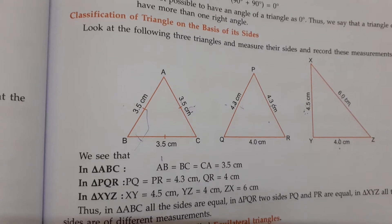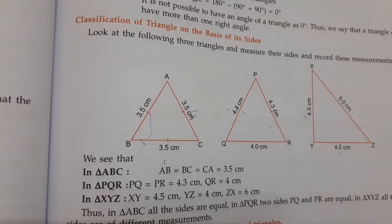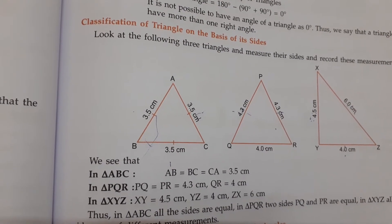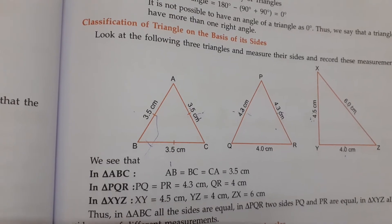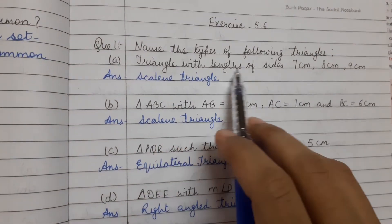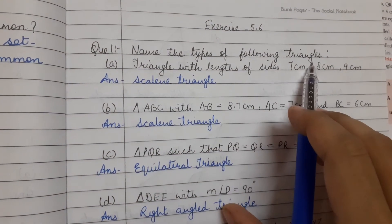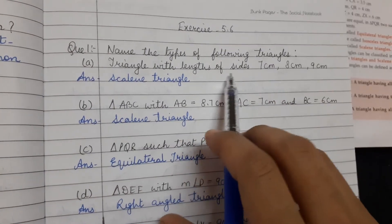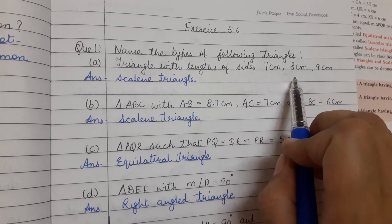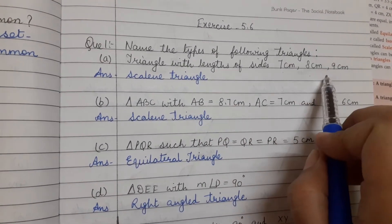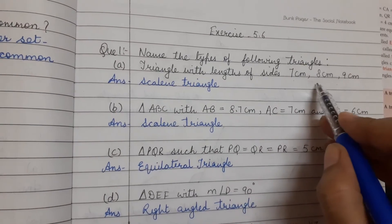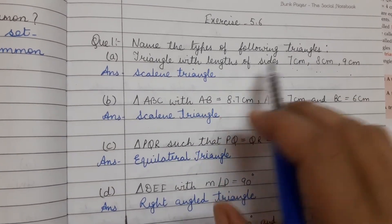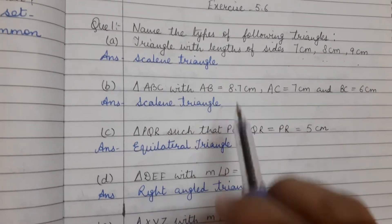Your exercise is based on this. Let's start exercise 5.6. Name the types of the following triangles. First, a triangle with sides 7 cm, 8 cm, and 9 cm. All three sides are of different lengths, so this type of triangle is a scalene triangle.